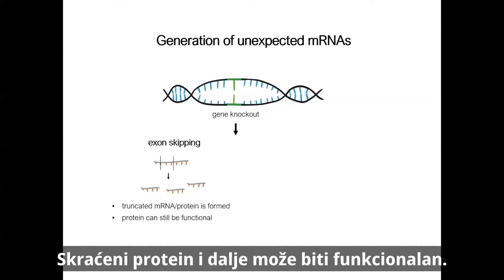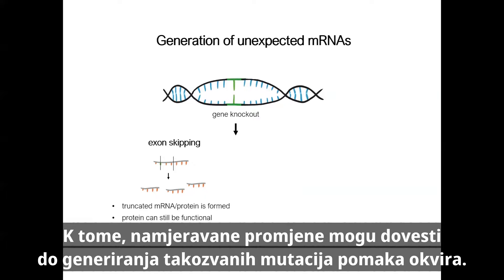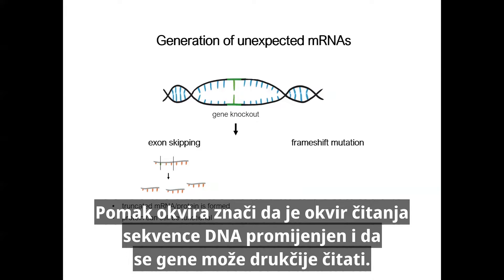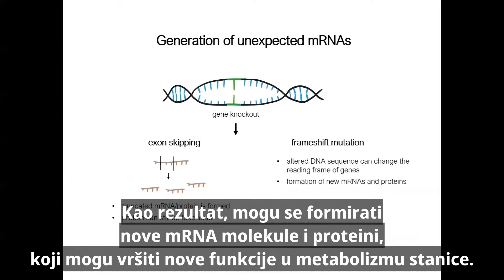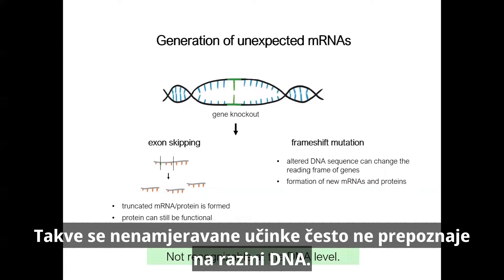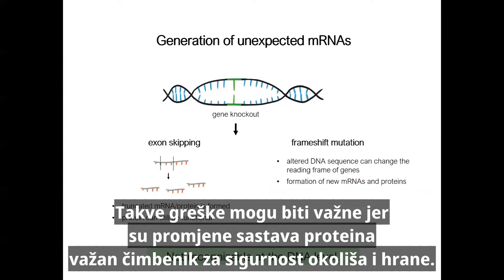The truncated protein can still be functional. In addition, the intended changes can lead to the generation of so-called frameshift mutations. Frameshift means that the reading frame of the DNA sequence of genes is changed and the genes can be read differently. As a result, novel mRNAs and proteins can be formed which can perform new functions in the cell's metabolism. Such unintended effects are often not recognized at the DNA level. Such errors could be important, as changes in protein composition are an important consideration for environmental and food safety — for example, allergens are proteins that can cause an immune response in the consumer.